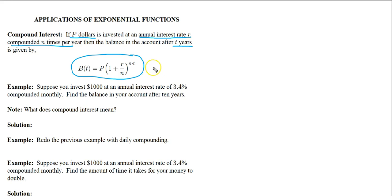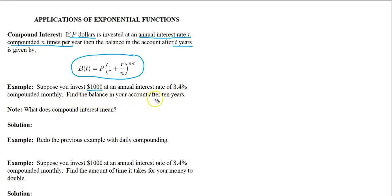Let's take a look at a few examples, and then we'll come back and prove this formula later on. In this example we assume we start with $1,000 at an annual interest rate of 3.4% compounded monthly, and we want to find the balance after 10 years. So we need to identify P, r, n, and t to plug everything into the formula.